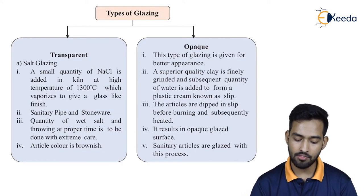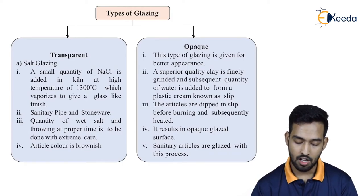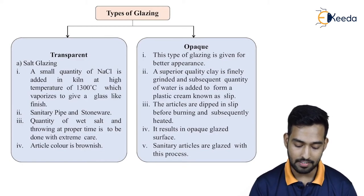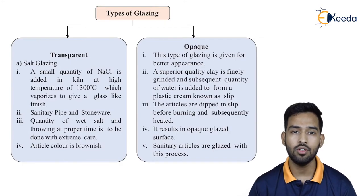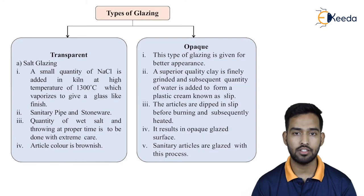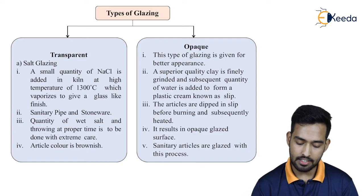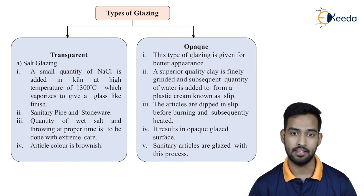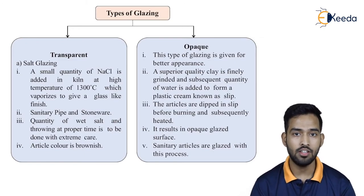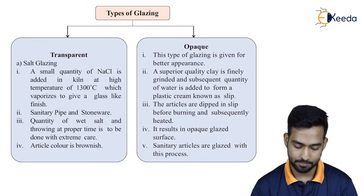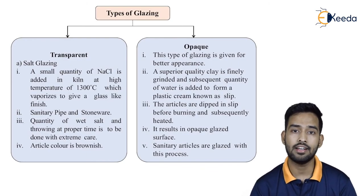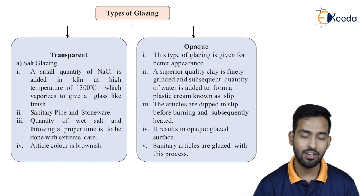For opaque glazing, a superior quality of clay is finely ground and sufficient water is added to form a plastic cream known as slip. The articles are dipped in the slip before burning and subsequently heated, resulting in an opaque glazed surface. Sanitary articles such as gully traps and wash basins are generally glazed with this opaque process, while tiles and other articles use transparent glazing.